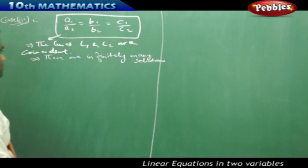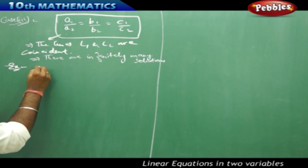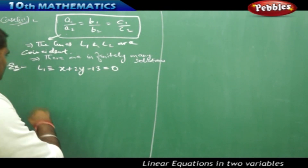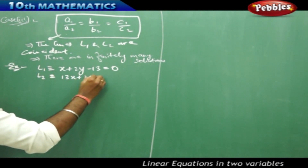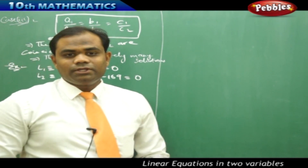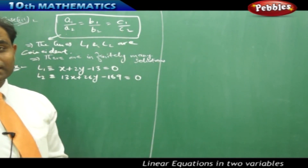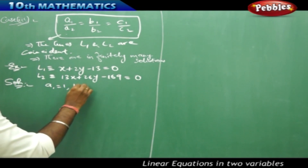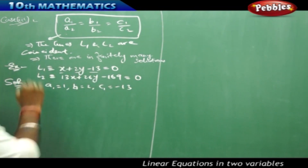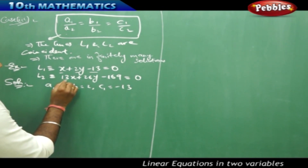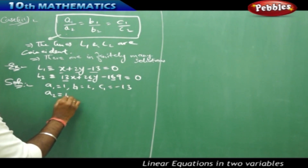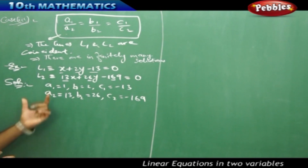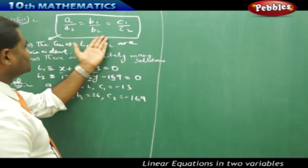Let's see this with an example. For coincident lines, take L1: x + 2y − 13 = 0, and L2: 13x + 26y − 169 = 0. From L1, the coefficients are a1 = 1, b1 = 2, and c1 = −13. From L2, the coefficients are a2 = 13, b2 = 26, and c2 = −169. Now let's substitute these into the Case 3 formula.